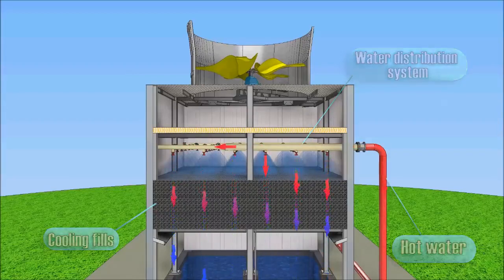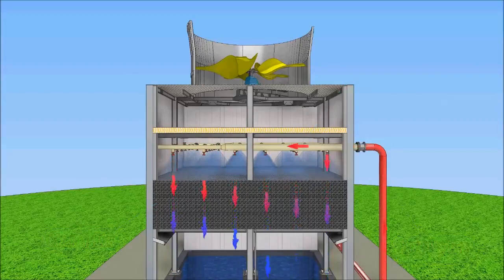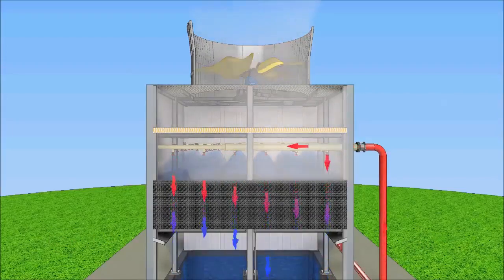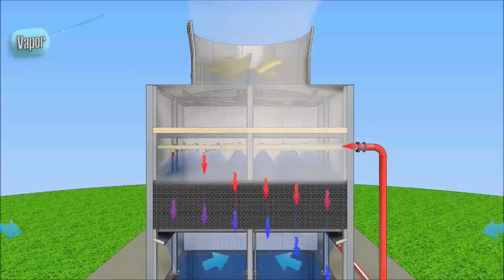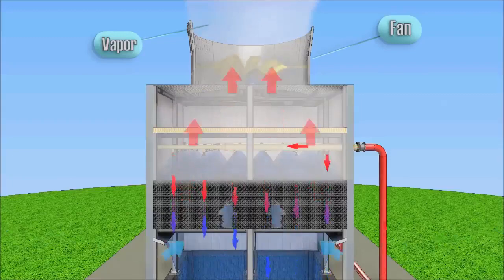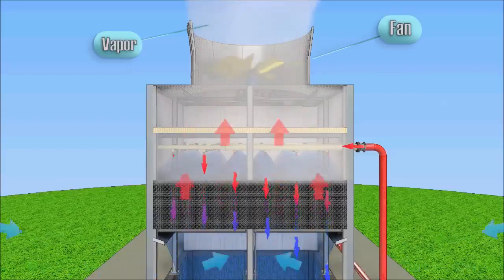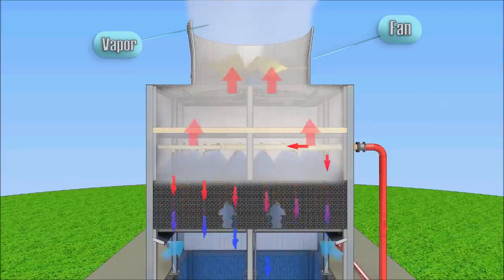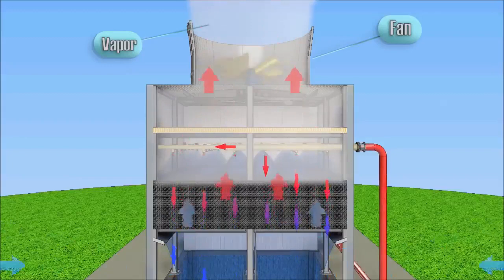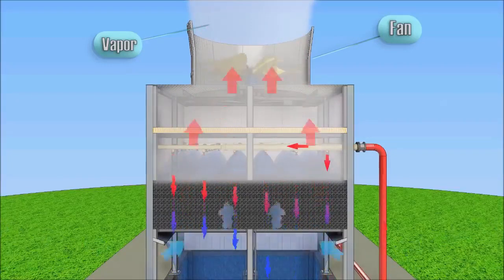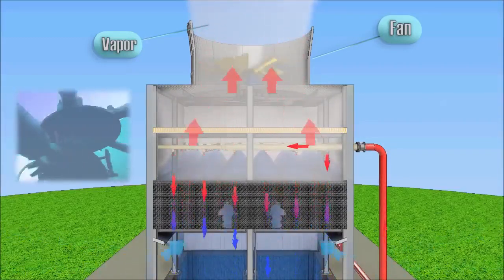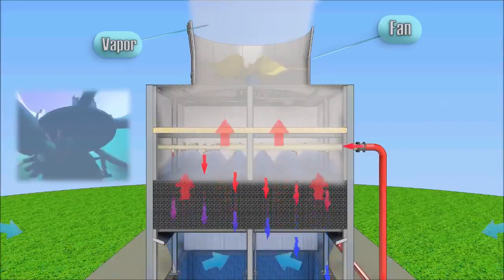Evaporation is accompanied by expenditure of energy required to convert liquid to vapor. The humidity of the air increases as water evaporates. With the help of a fan, a steady airflow with low humidity is fed in. The air passes through the fills.